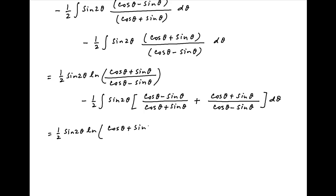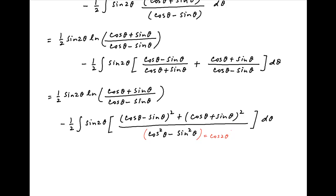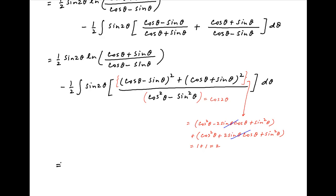This equals half of sin 2θ times ln[(cos θ + sin θ)/(cos θ − sin θ)] minus half of the integral of sin 2θ times [(cos θ − sin θ)² + (cos θ + sin θ)²] divided by (cos θ + sin θ)(cos θ − sin θ), which equals cos 2θ. Expanding the numerator: cos²θ − 2 sin θ cos θ + sin²θ plus cos²θ + 2 sin θ cos θ + sin²θ. The 2 sin θ cos θ terms cancel, and since cos²θ + sin²θ = 1, the numerator simplifies to 1 + 1 = 2.